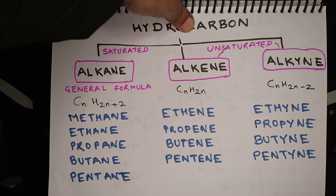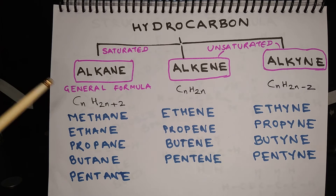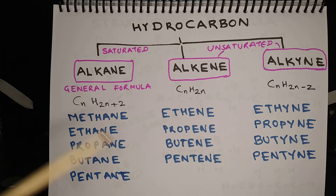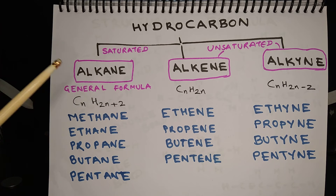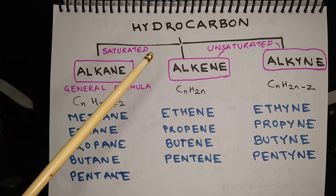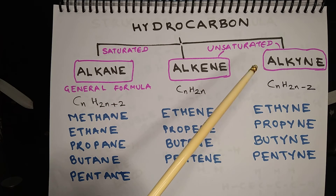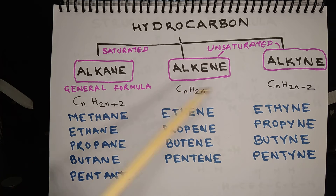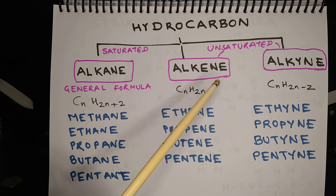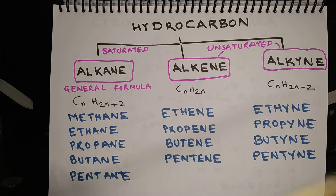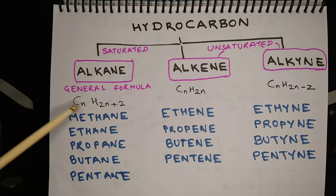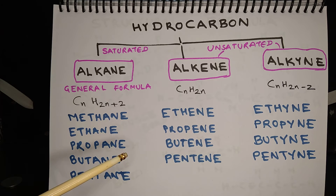Now let us move on to hydrocarbon. The compounds which contain hydrogen and carbon are called hydrocarbons. There are two types: saturated hydrocarbon and unsaturated hydrocarbon. Saturated hydrocarbon is also known as alkane, and there are two types of unsaturated hydrocarbons, namely alkene and alkyne. The general formula of alkane is CnH(2n+2), where n stands for the number of carbon atoms.